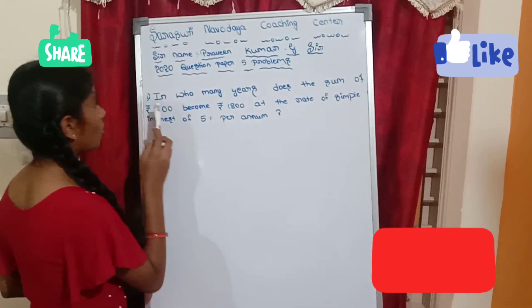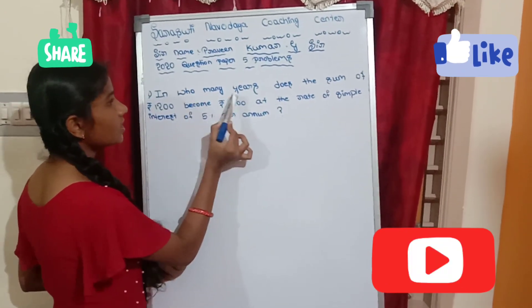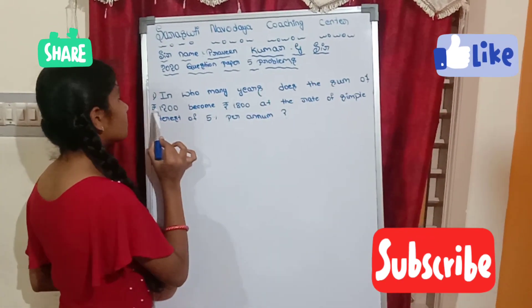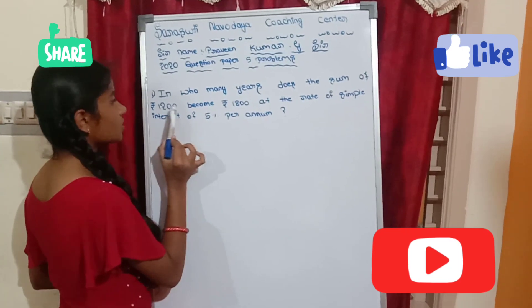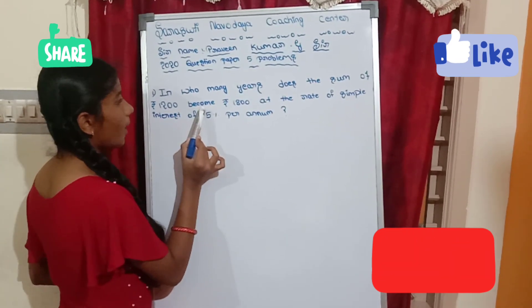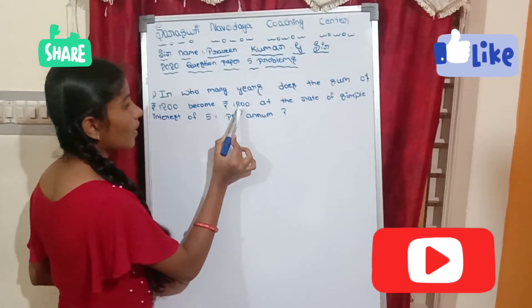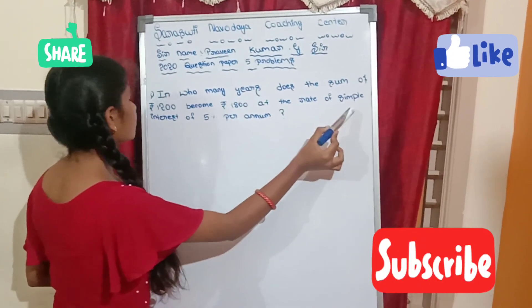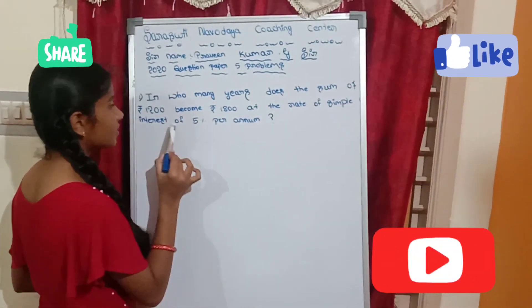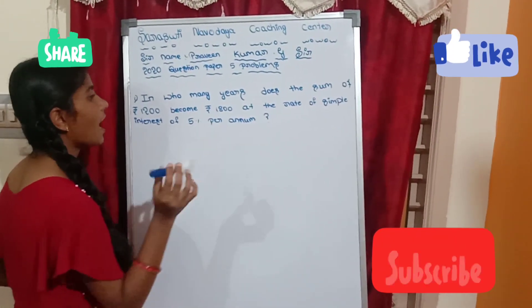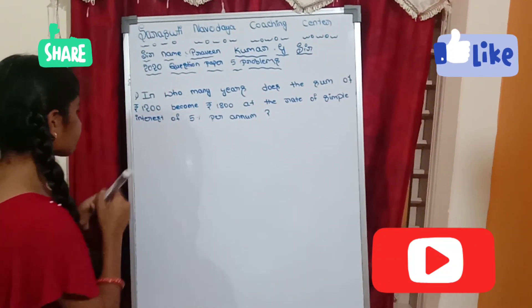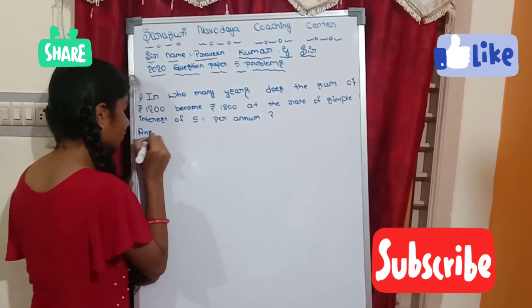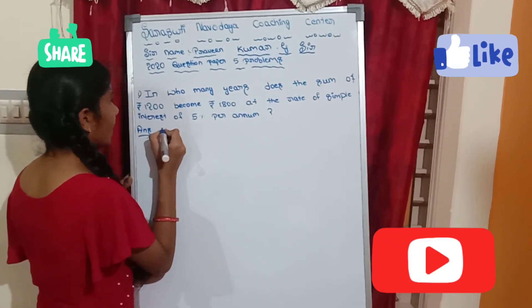First problem: In how many years does the sum of rupees 1200 become rupees 1800 at the rate of simple interest of 5% per annum? Answer: